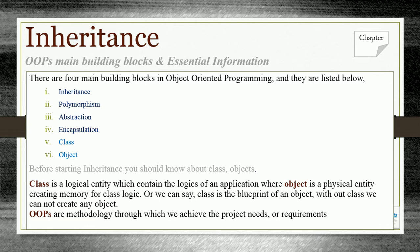The proper definitions: a class is a logical entity which contains the logic of an application, where an object is a physical entity creating memory for a class logic. Or we can say a class is the blueprint of an object — without a class we cannot create any object.